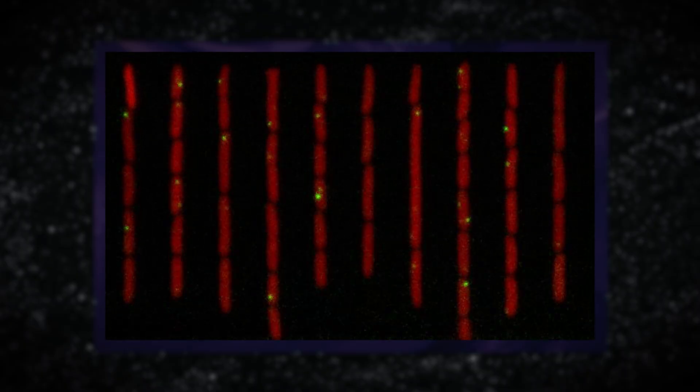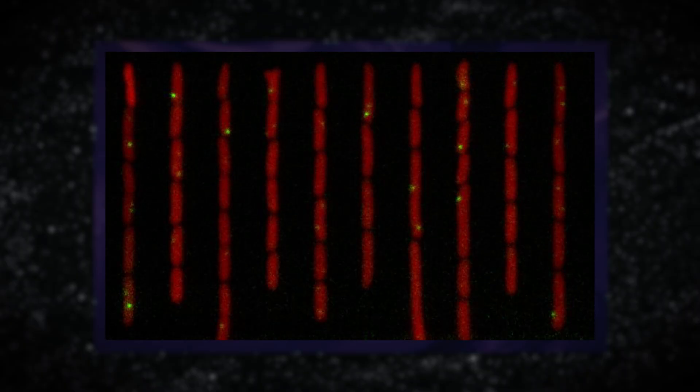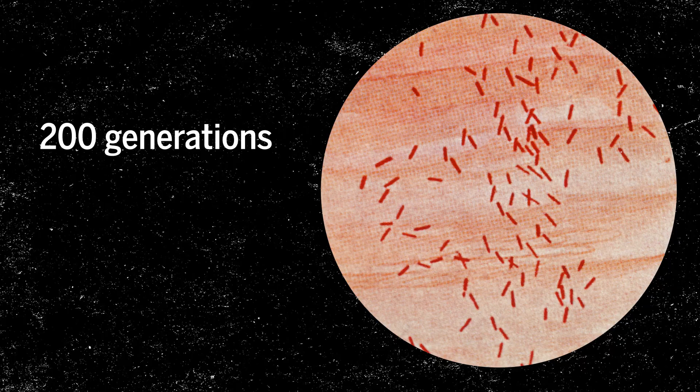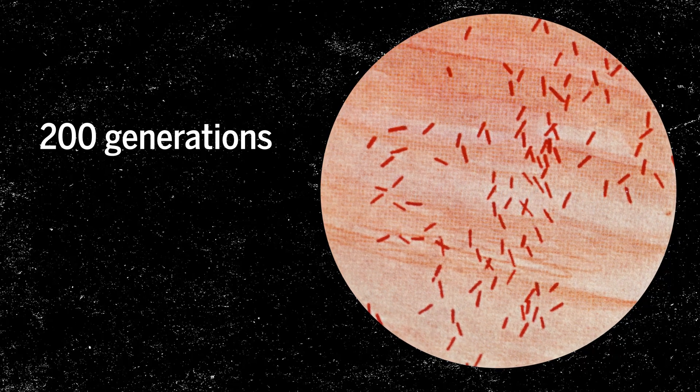Bacteria are red and replication error machinery, markers for mutation, are the yellow dots. The researchers followed bacterial cells over 200 generations to look for mutations and the effects those mutations had.